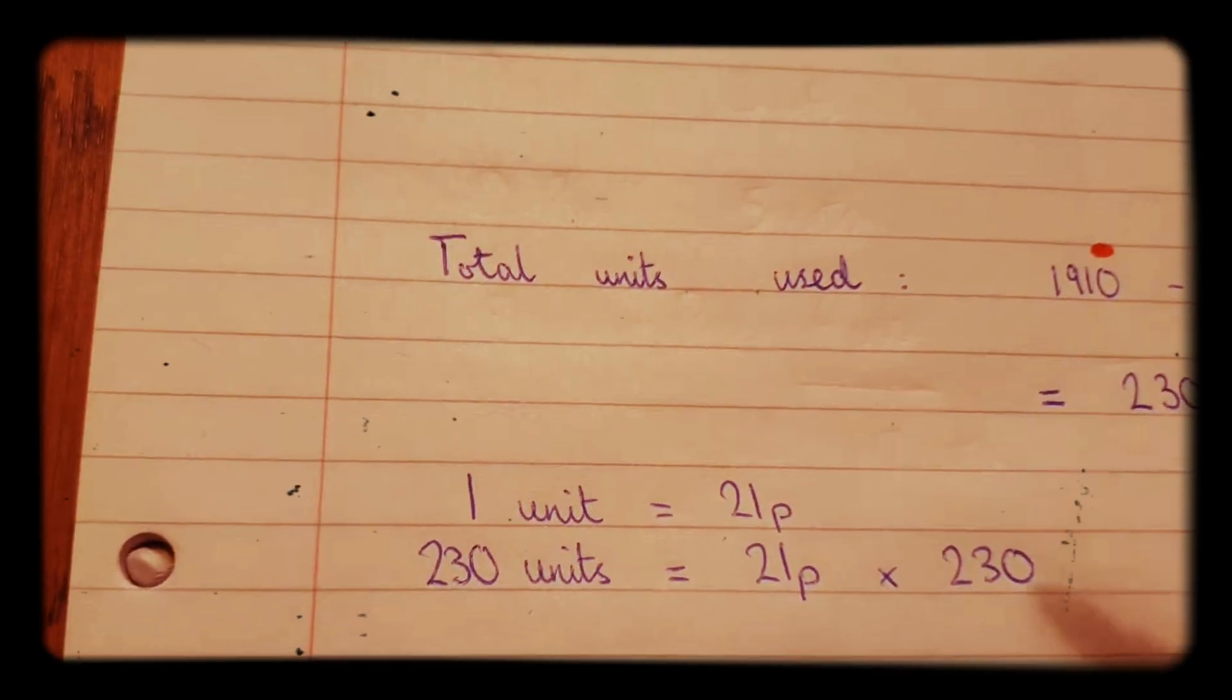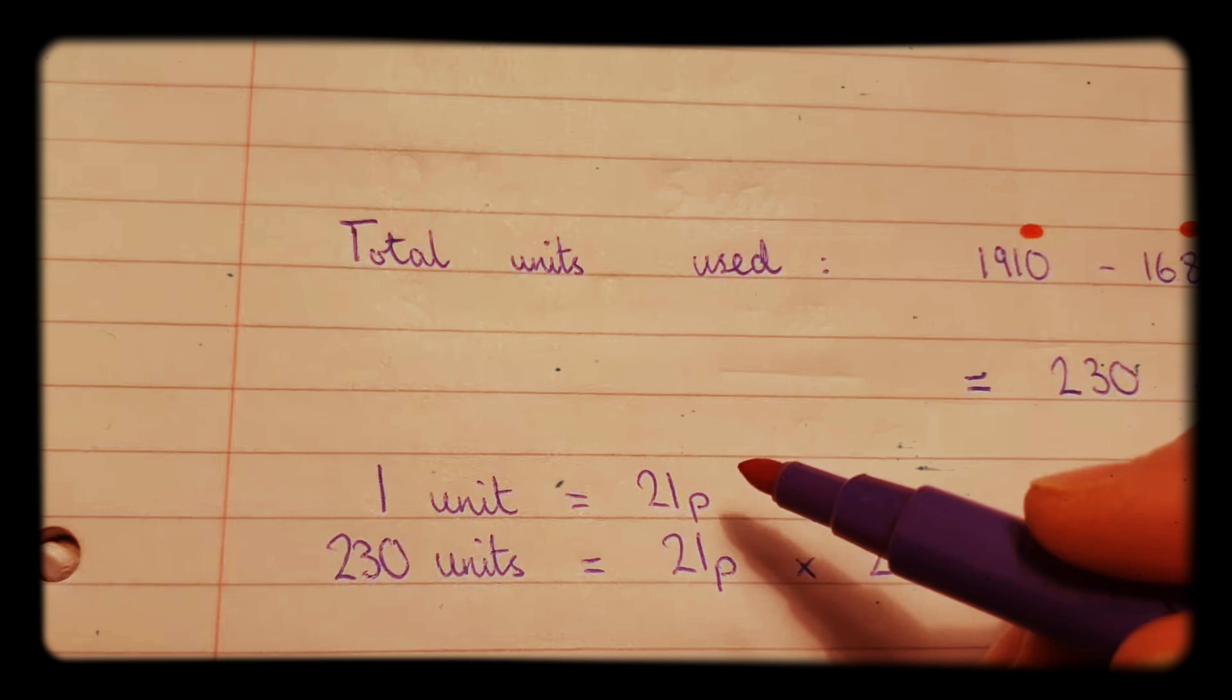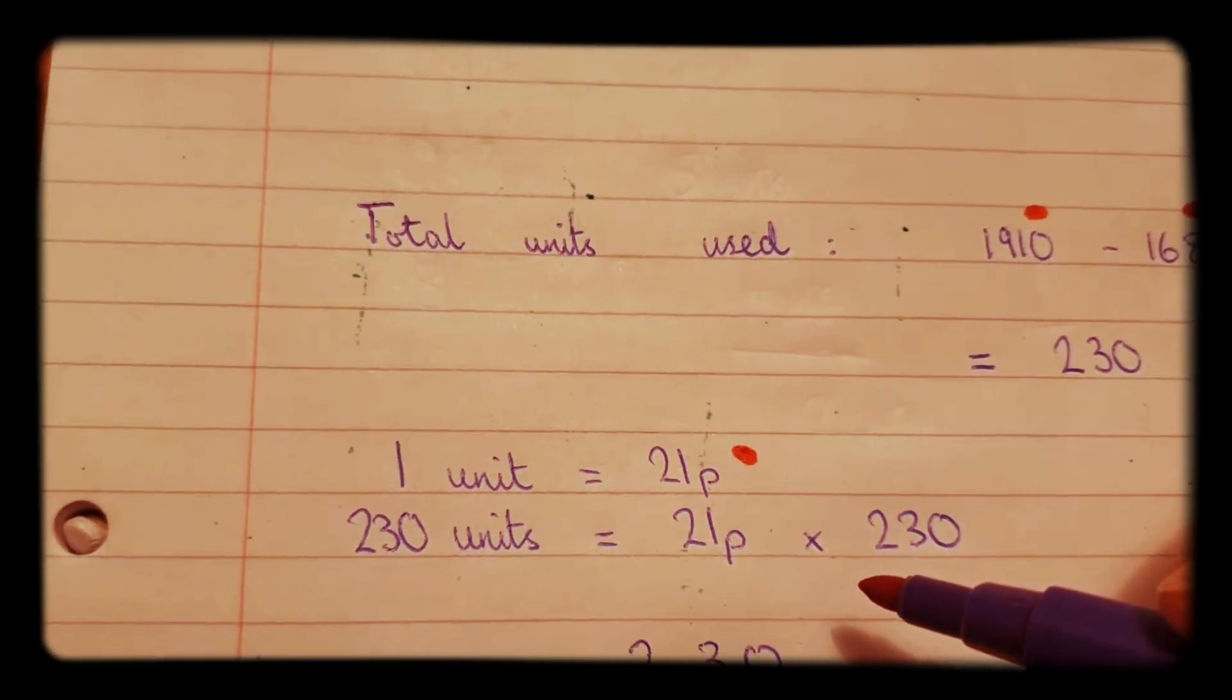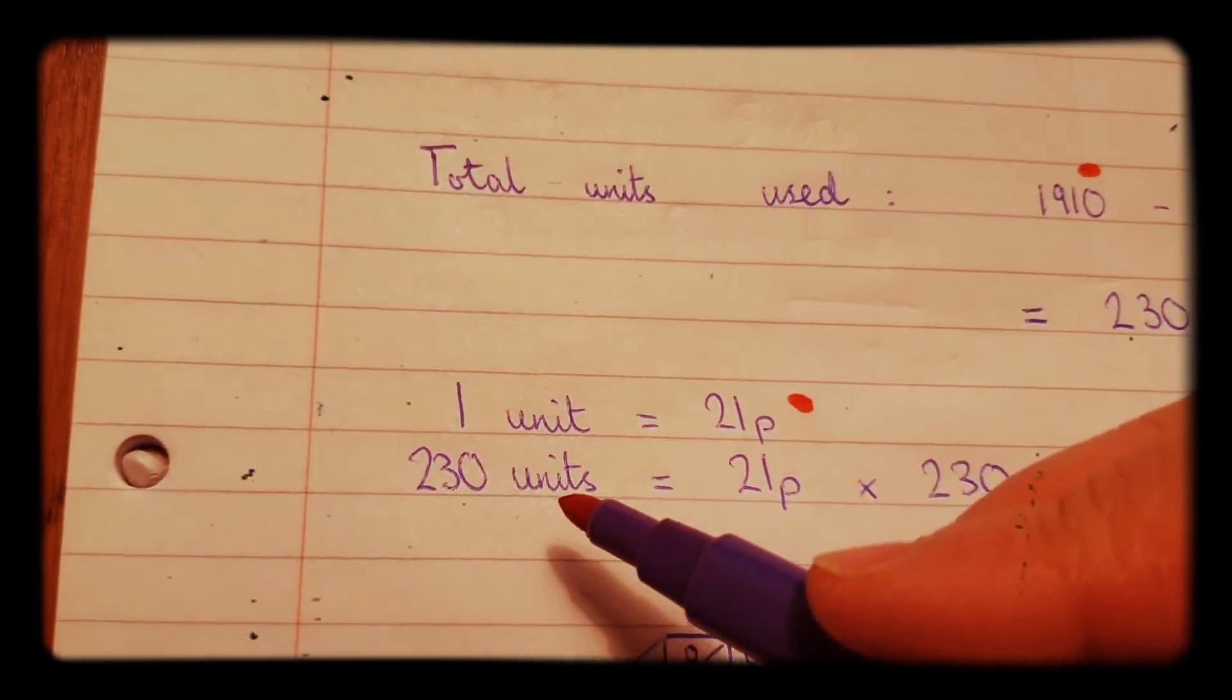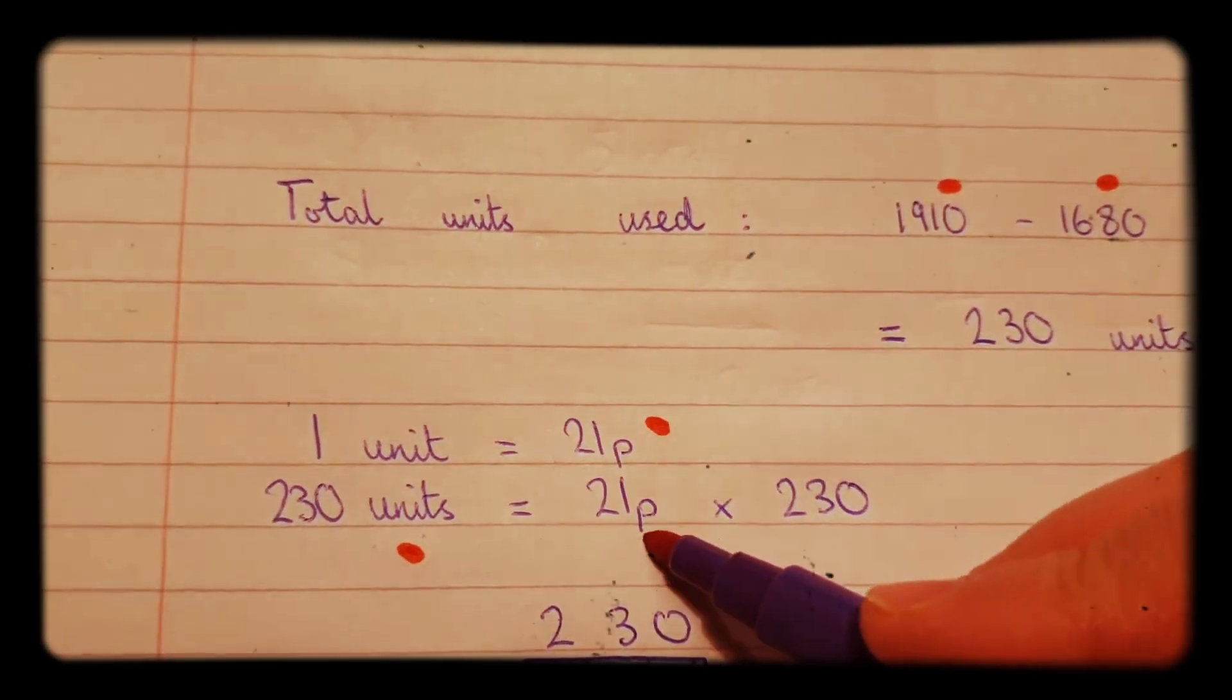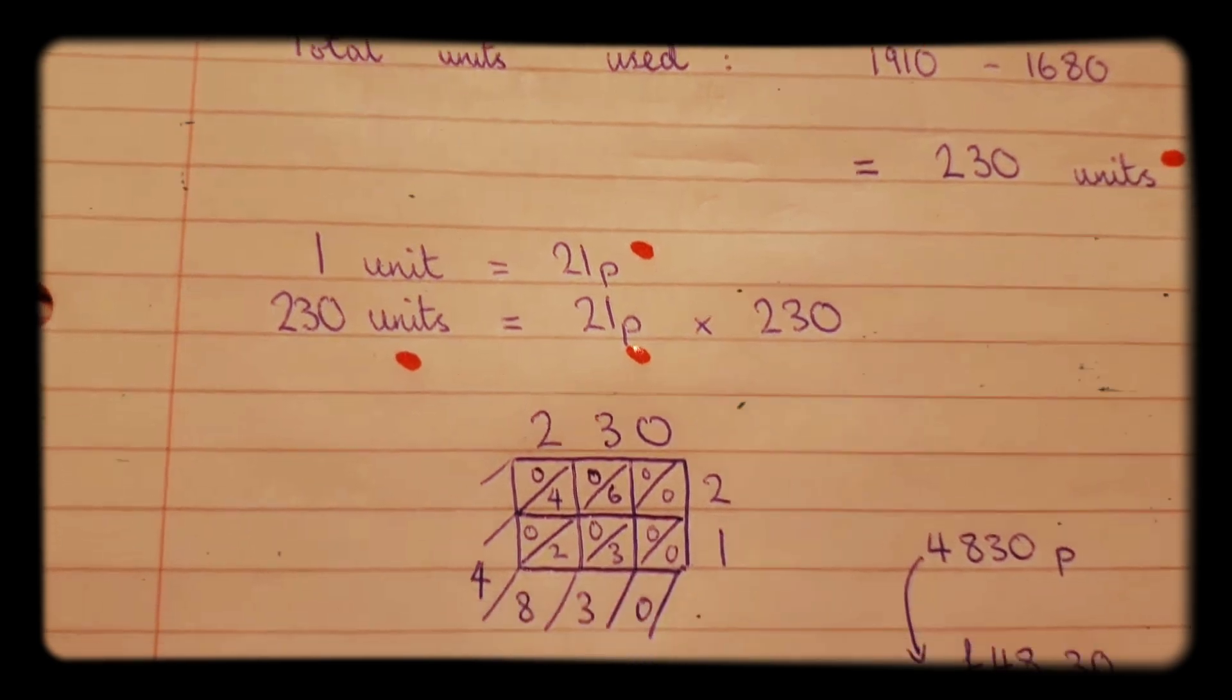The next thing you do is each unit is 21p. Charlie has used 230 units, so 230 units is 21p times 230.